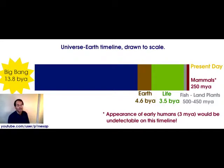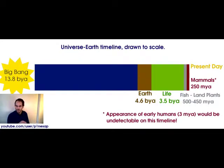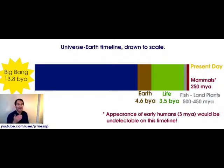Fish and land plants made an appearance only 500 to 450 million years ago. Mammals came on the scene 250 million years ago, and birds would be right about half that distance — about 140 million years ago. That brings us to the present day. Now, the appearance of the earliest humans — people whose brains were about half the size of modern humans', but still being generous — was three million years ago.